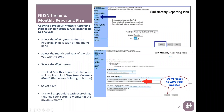Alternatively, if you prefer not to use the copy method, you can select Add each time and follow the add process — filling out the required information and saving — to create new monthly reporting plans one at a time. Either way works.